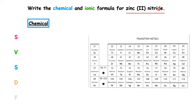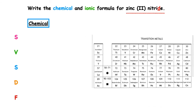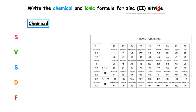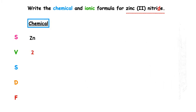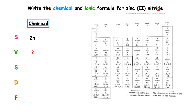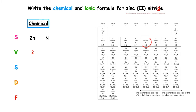We start off with our SVSDF. The chemical symbol for zinc is Zn. The valency is two, and that is given in the name of the formula using the Roman numerals. The chemical symbol for nitrogen is N. It's found in group five, valency three.